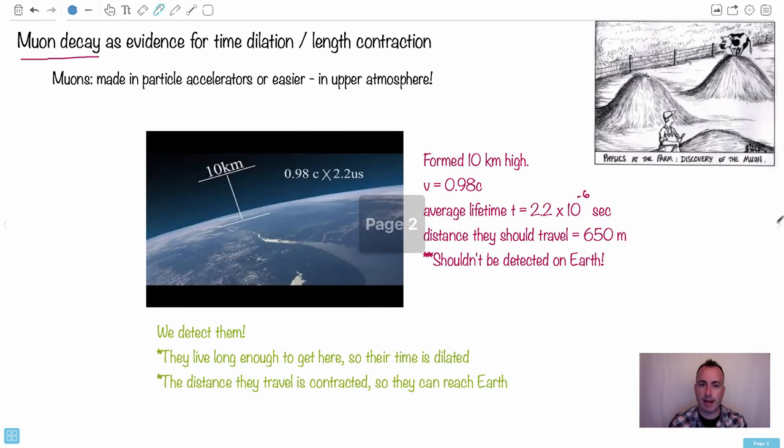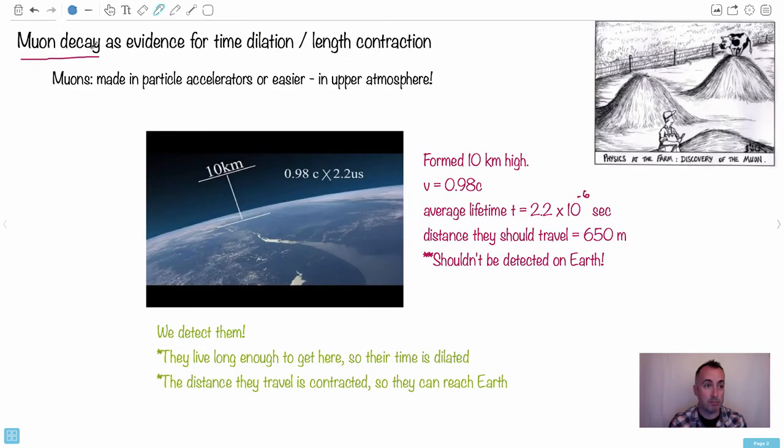But let's talk about muon decay now. So if you remember what muons are from particle physics, a muon is this symbol mu here. Remember that's one of the leptons from particle physics. So muons, they're made in particle accelerators.